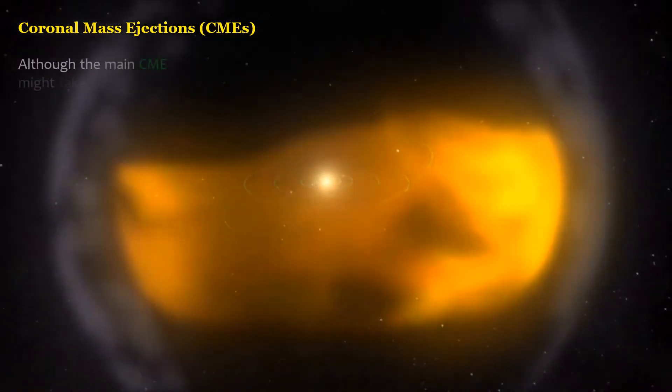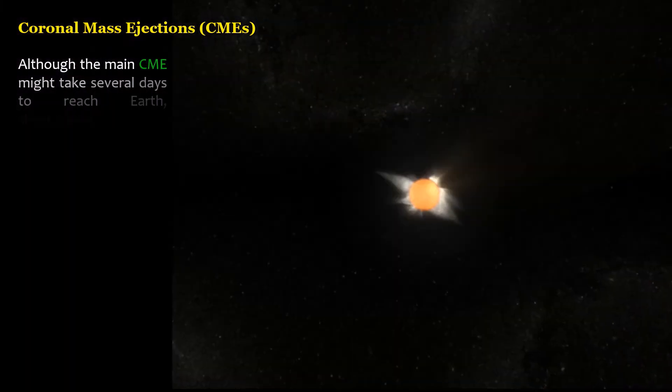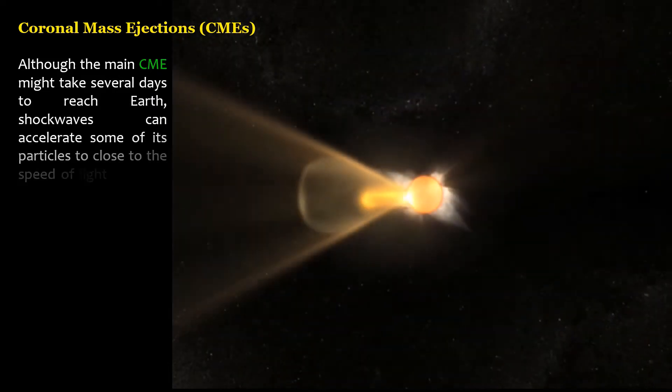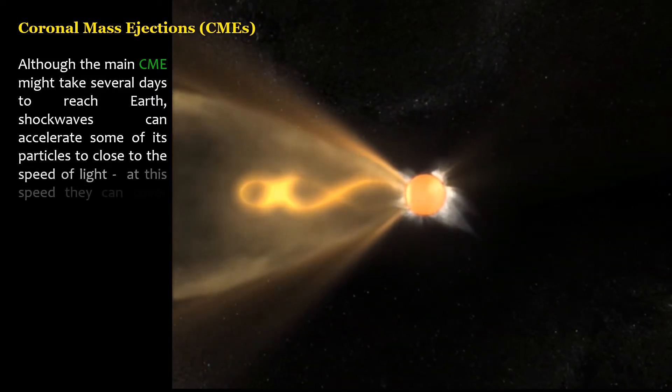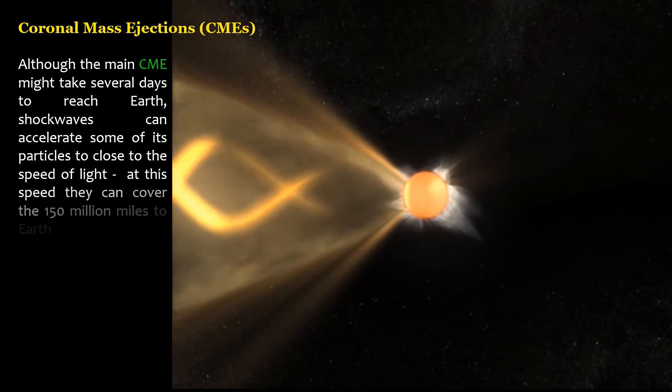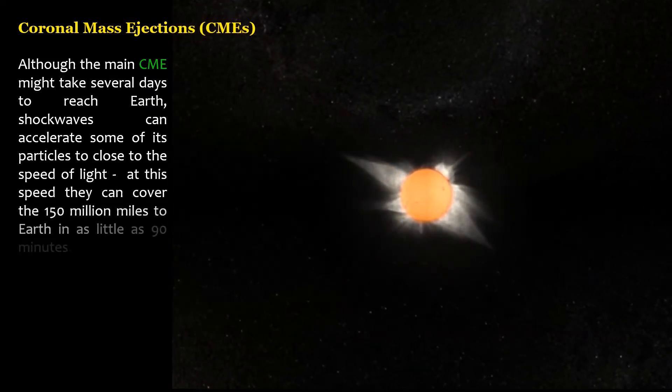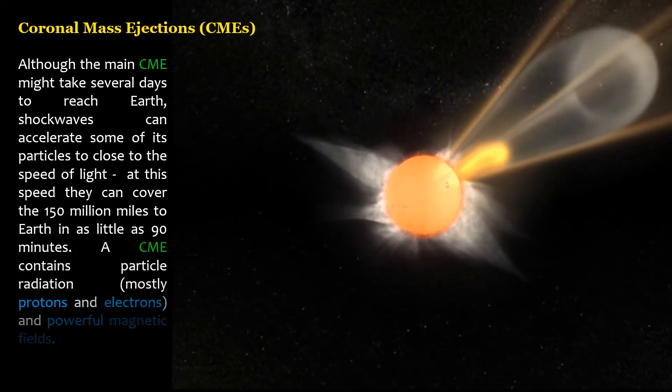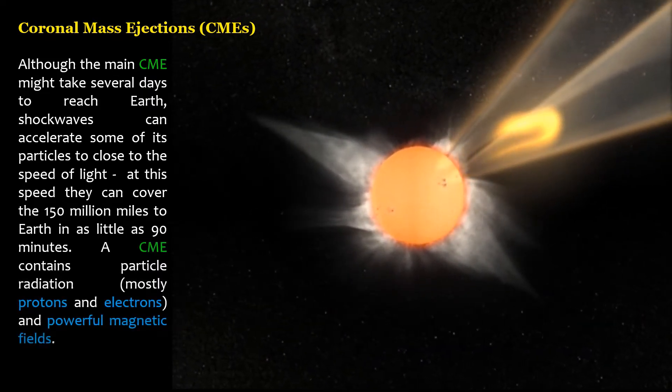Although the main CME might take several days to reach Earth, shockwaves can accelerate some of its particles to close to the speed of light. At this speed they can cover the 150 million miles to Earth in as little as 90 minutes. A CME contains particle radiation, mostly protons and electrons, and powerful magnetic fields.